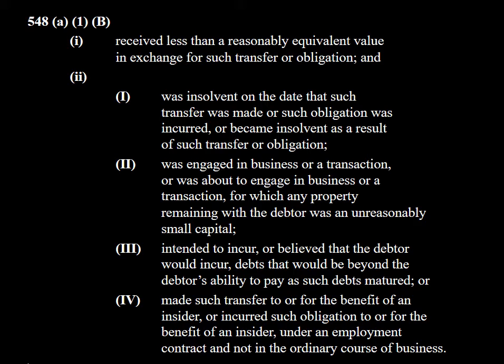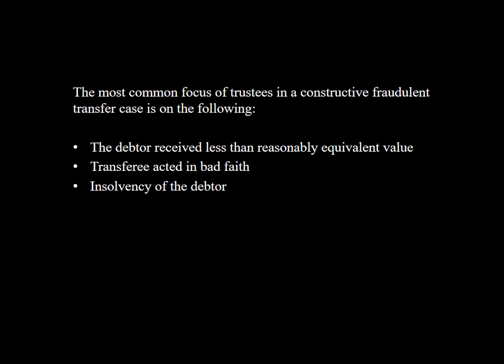These are the most common issues for constructive fraudulent conveyance. First: did the debtor receive less than reasonably equivalent value? Was it market value or not? That's a question of fact and an important issue. Second: did the transferee act in bad faith — for instance, in a Ponzi scheme, did the transferee know there was a Ponzi scheme? Did he know there was something not kosher about the way he was getting paid? Was he totally innocent and just thought Madoff was a great guy he golfed with in Palm Beach?